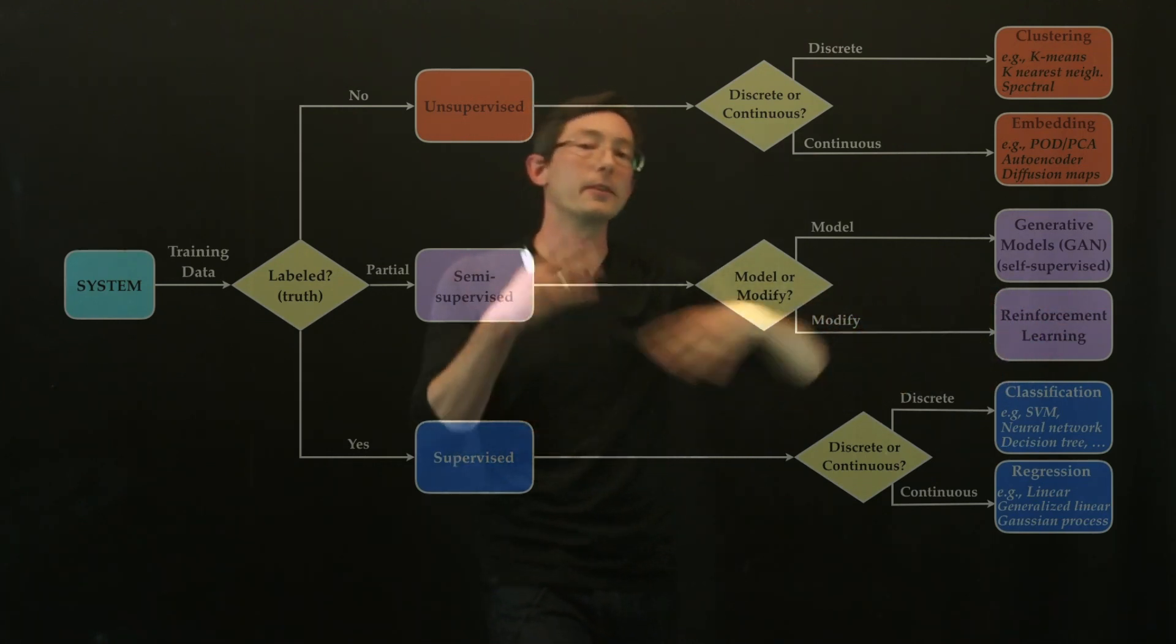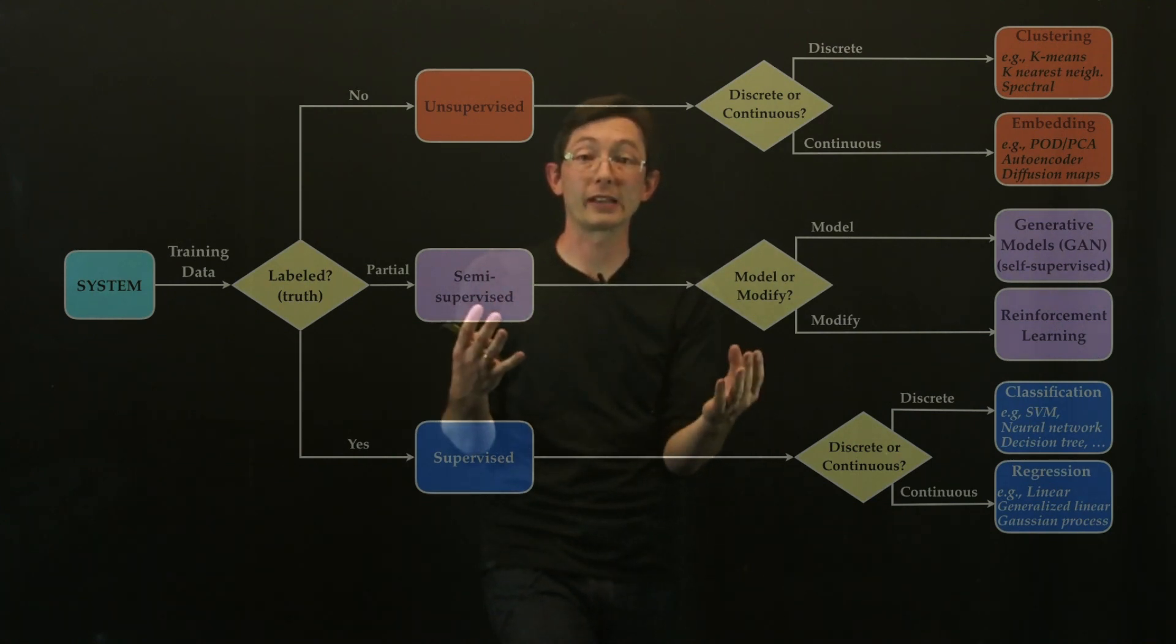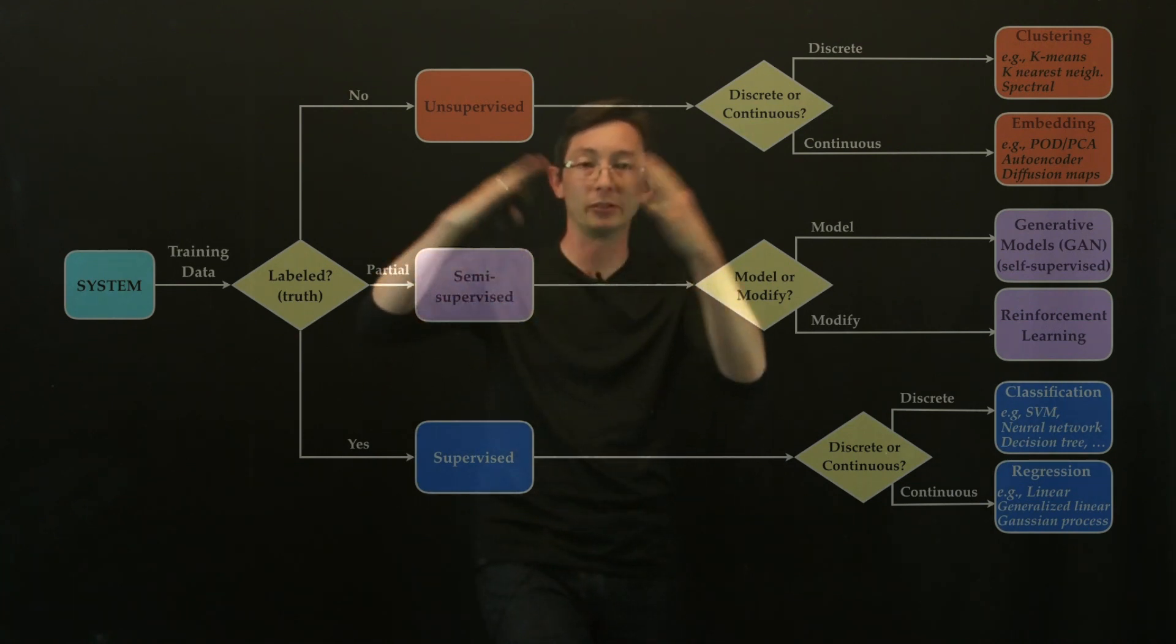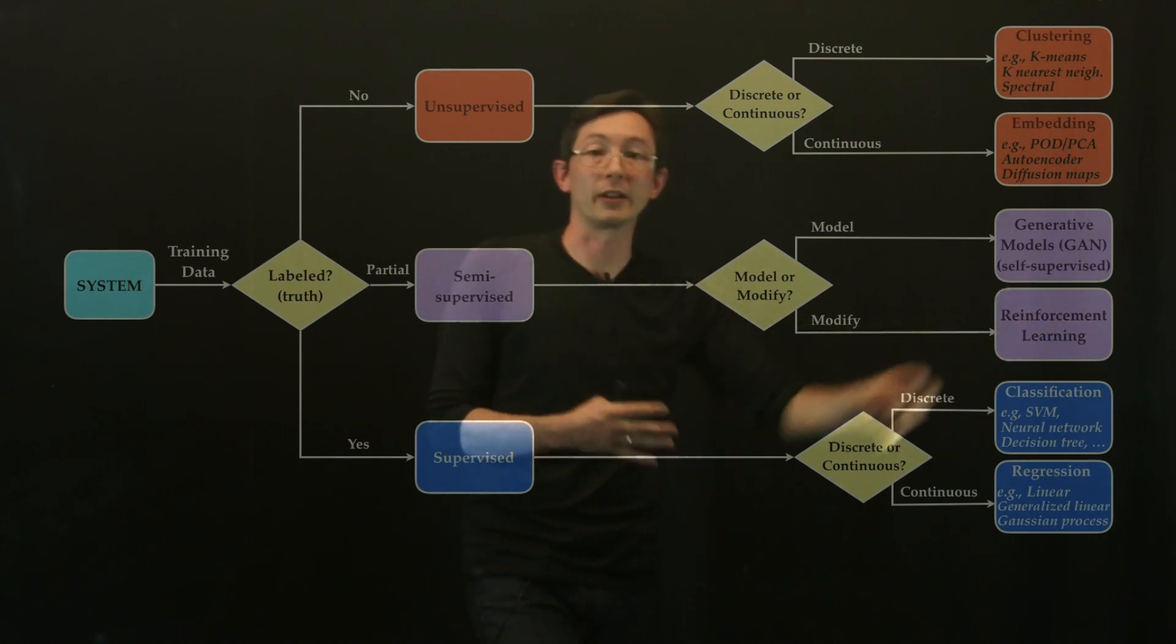So this is where you've probably heard of algorithms that have beaten the human experts at Go and chess and they can play arcade games and build robots that go and interact with the world. That's all reinforcement learning.